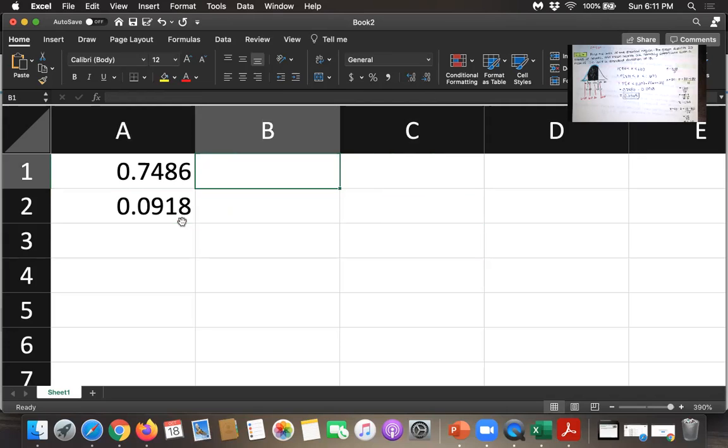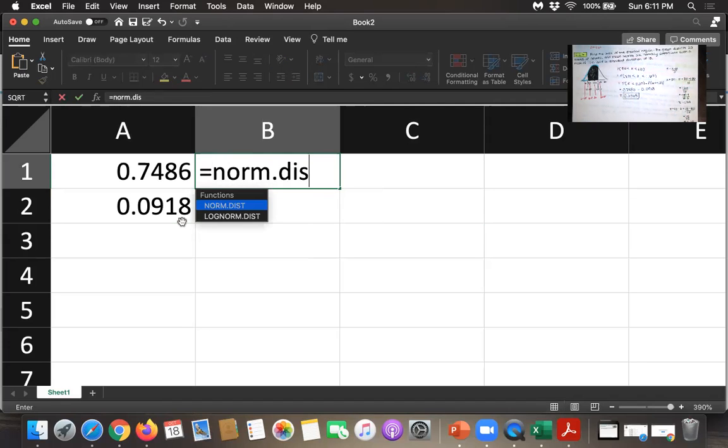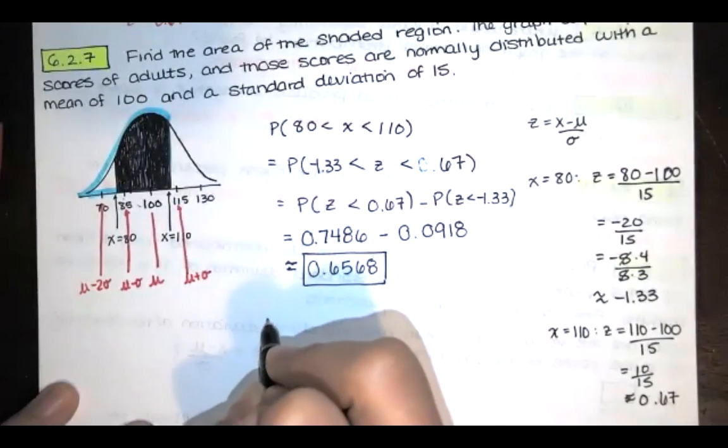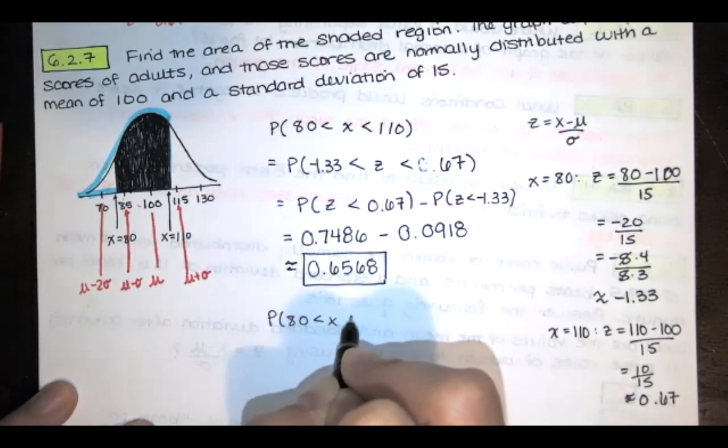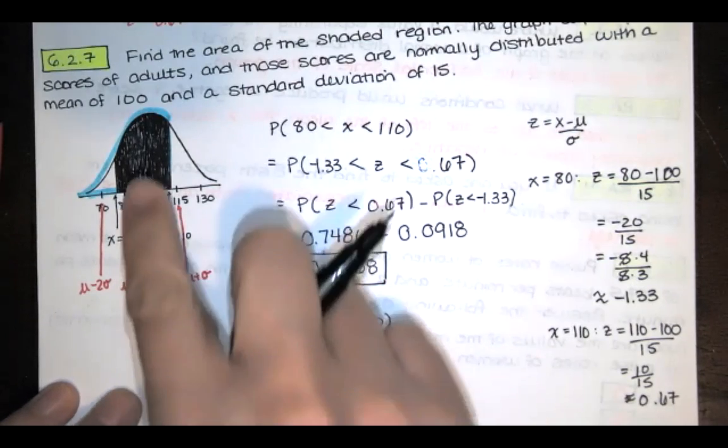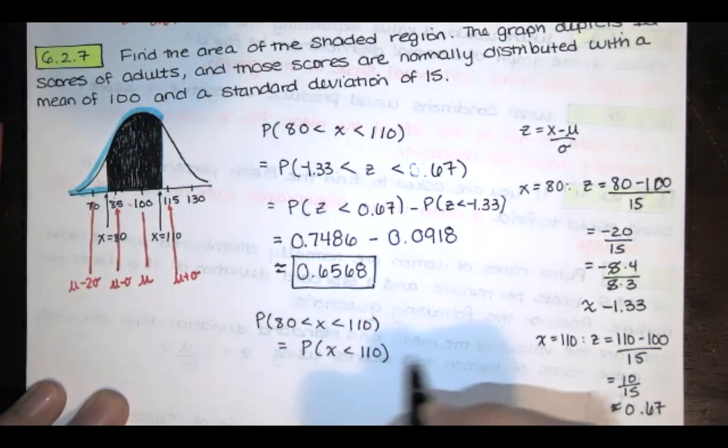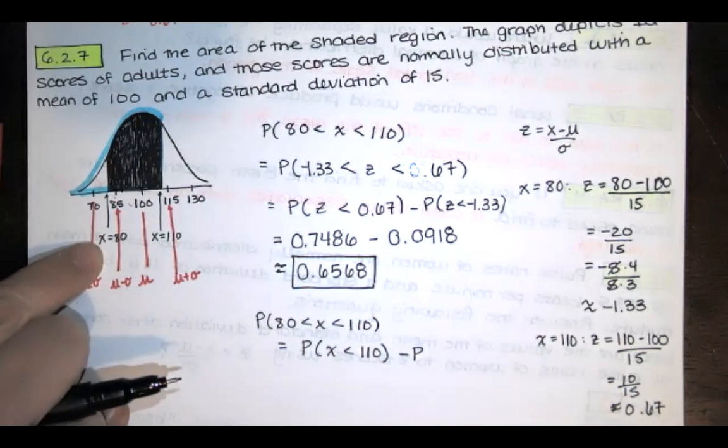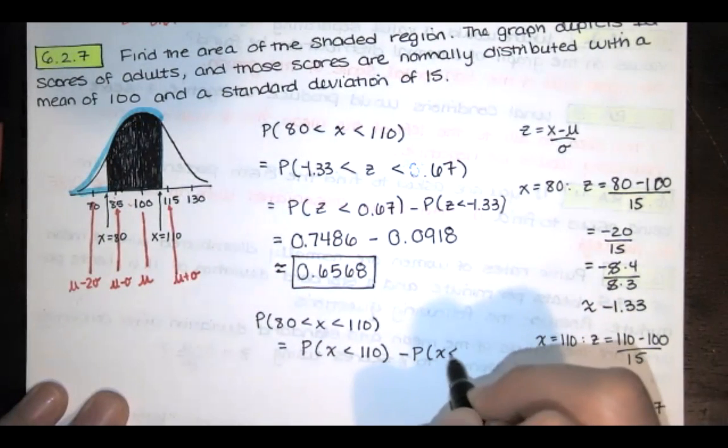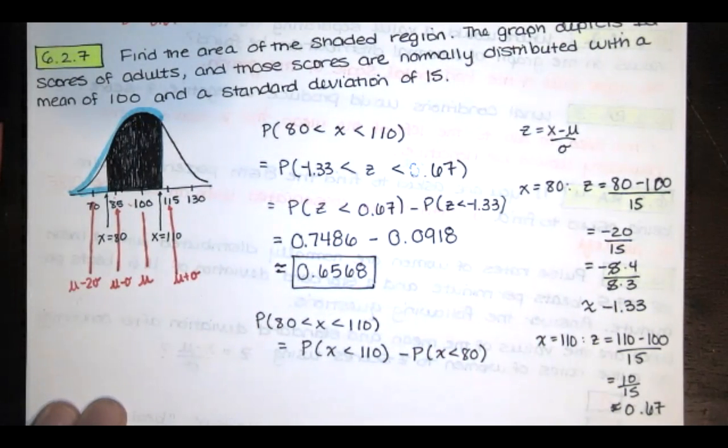Now I want to show you that you can use the same function, but you can also use the mean and standard deviation of the IQ scores. If you're using Excel, you actually don't have to convert to z-scores at all, which is very nice. So I would type equals n-o-r-m dot d-i-s-t. And I would take that x equals, well actually, let's write it down on the paper first. If I want the probability that x is between 80 and 110, I could write that this way. I want the area to the left of 110. So that's the probability that x is less than 110 minus the probability that x is less than that value, which happened to be 80. So I can use this instead.